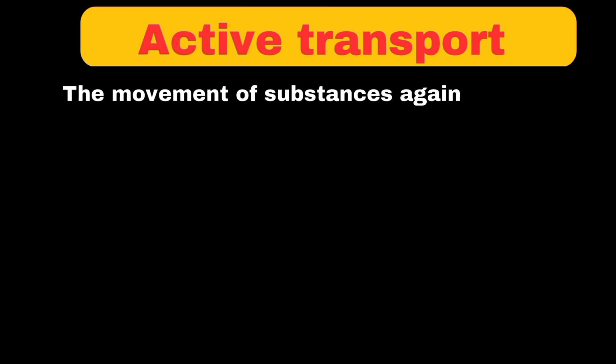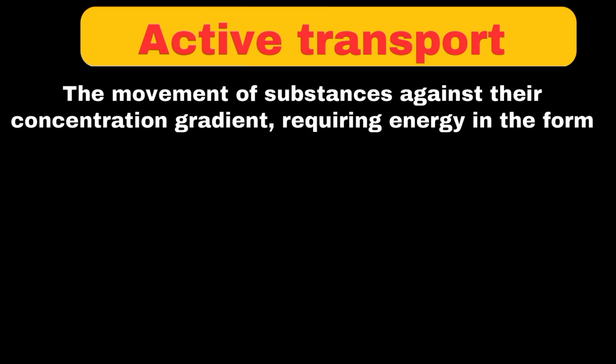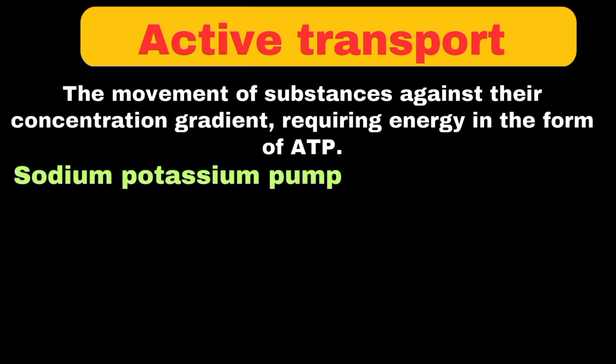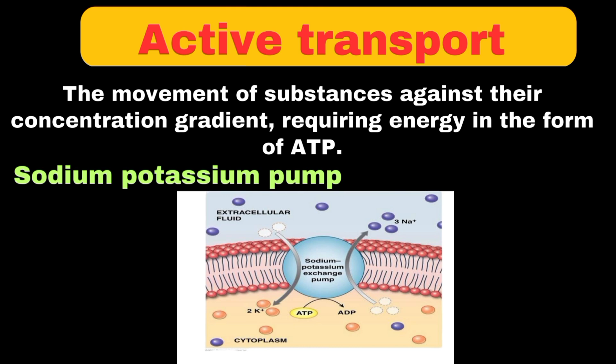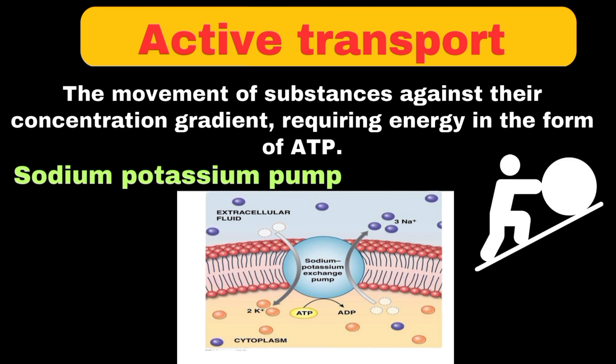Active transport can be defined as the movement of substances against their concentration gradient, requiring energy in the form of ATP. For example, the sodium-potassium pump uses ATP energy to push sodium ions out of the cell while pulling potassium ions in, even when these ions want to move in the opposite direction — like pushing a heavy box uphill, needing energy to work against natural forces.